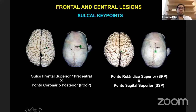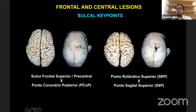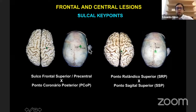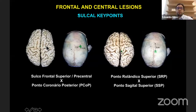The superior aspect of the central sulcus is called the superior Rolandic point, located five centimeters posterior to the bregma. Using these two Rolandic points, we can define where the central sulcus lies. Another important point is located three centimeters off midline and one and a half centimeters posterior to the coronal suture — this marks the connection of the superior frontal sulcus with the precentral sulcus.